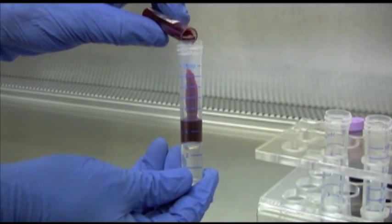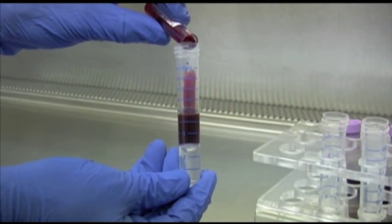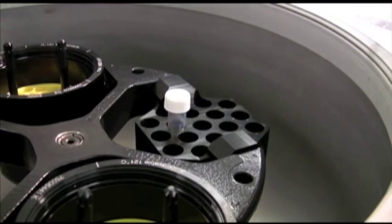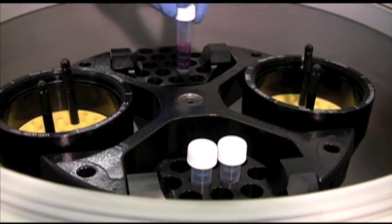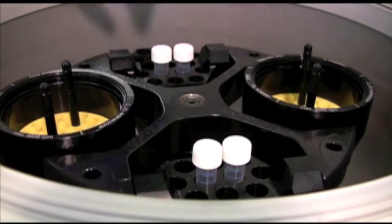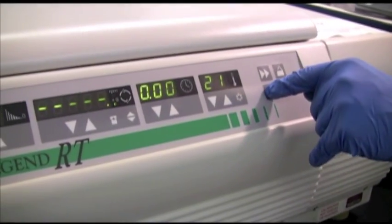Freely pour 3 to 6 milliliters of fresh anticoagulated whole blood into the upper chamber of each AccuSpin tube. Next, centrifuge the AccuSpin tubes containing the sample at 1000 G's, maintaining room temperature for 10 minutes, or centrifuge at 800 G's, maintaining room temperature for 15 minutes. Be sure the brake is turned off on your centrifuge for this step.